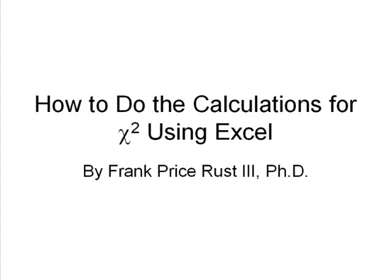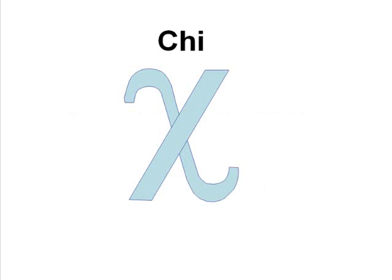But before we do that, I want to make sure that you have a way of remembering how to say chi-square. This is a symbol — chi is spelled C-H-I. Now I know some of you want to call it chi like a chia pet, or some other way, but chi is the way it should be pronounced.